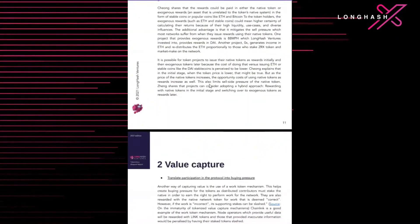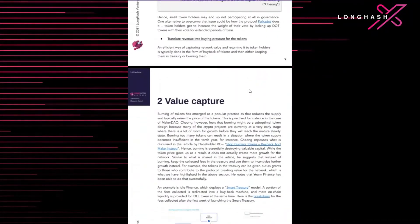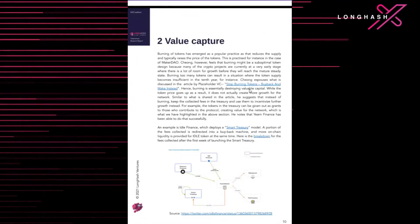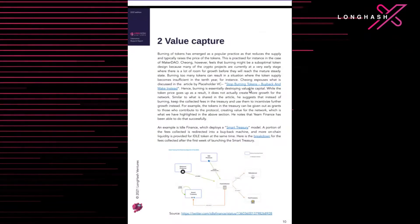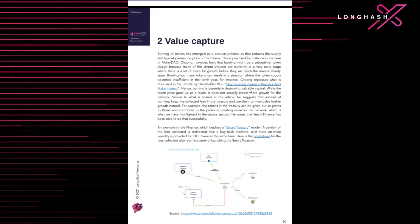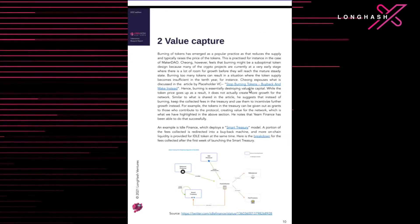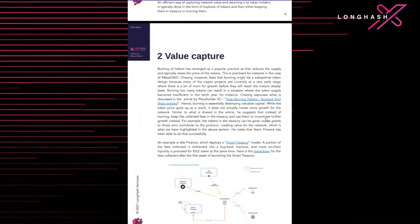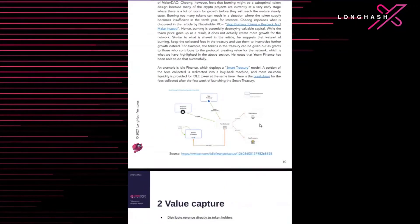There are also work token mechanisms and bonding curves that create a form of gating to capture the value of people wanting to participate. These necessitate people to actually buy the token in order to provide a service or participate. Bonding curves can also artificially increase the token price to capture value from purchasing demand, but should be used carefully as they lock up liquidity.